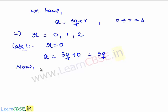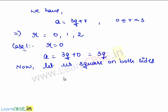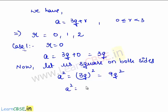First, let us take r equal to 0. This implies a equals 3q plus 0, which equals 3q. Now let us square both sides. Therefore, a squared equals (3q)² which is 9q². And 9q² can be written as 3 times 3q². So this is of the form 3m where m equals 3q².